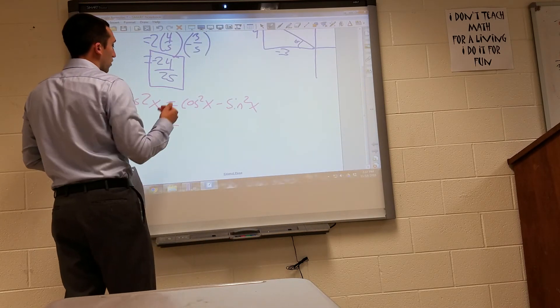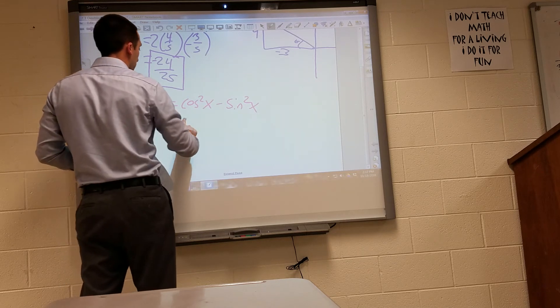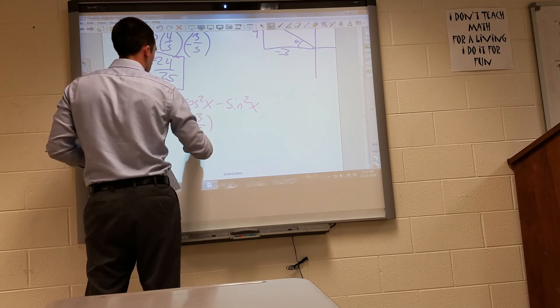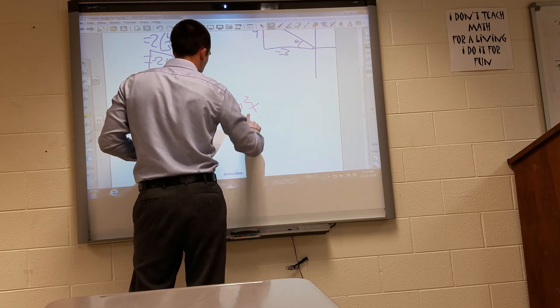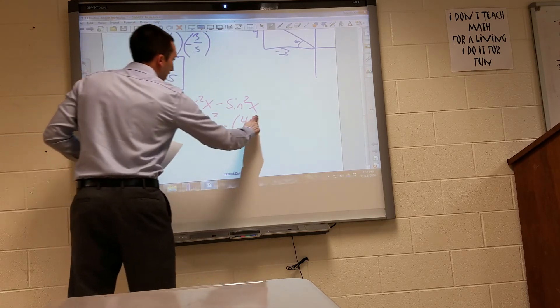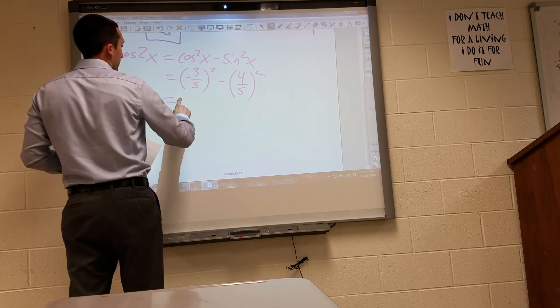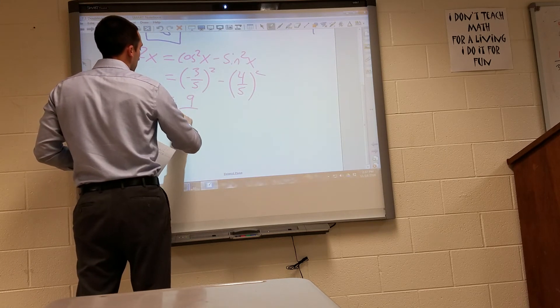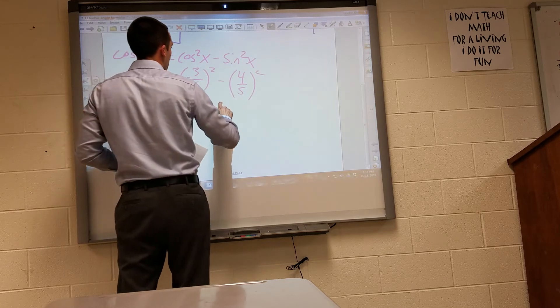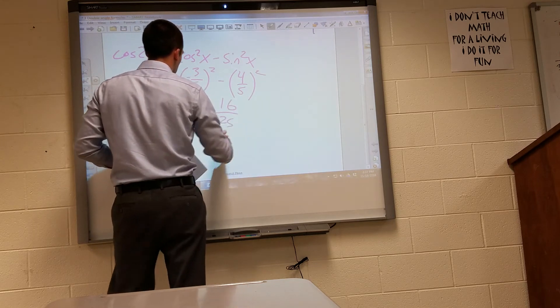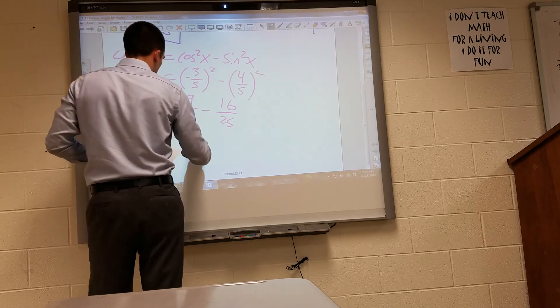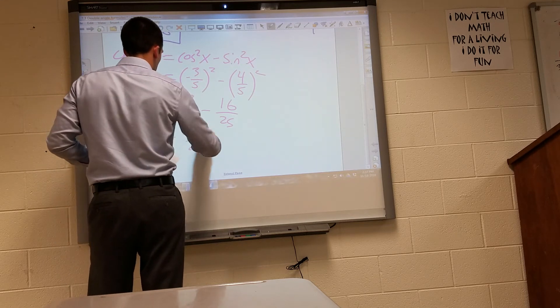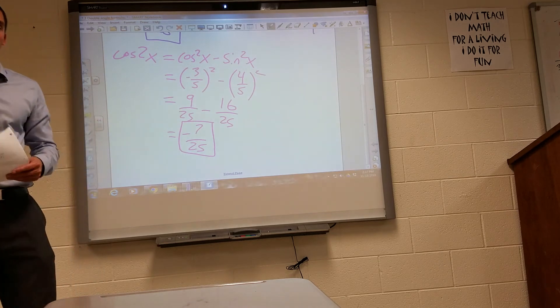Okay, so I know cosine to be negative three-fifths. I know sine to be four-fifths. So when I square these, I get positive 9 twenty-fifths minus positive 16 twenty-fifths, which gives me an overall answer of negative 7 twenty-fifths. And that's the cosine of 2x.